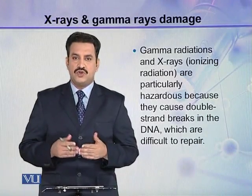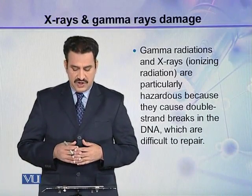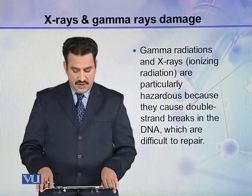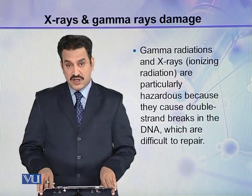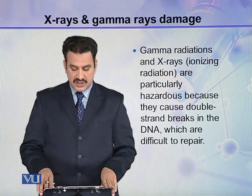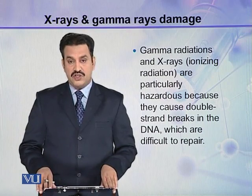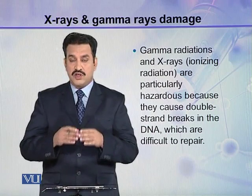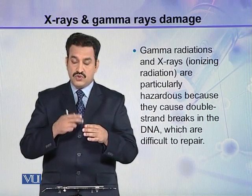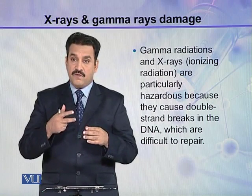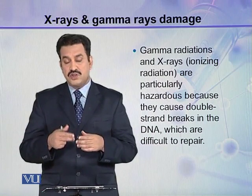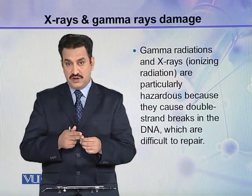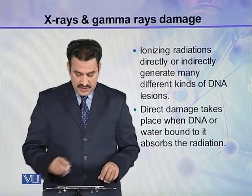Besides UV light, gamma radiations and X-rays, which are ionizing radiations, are particularly hazardous to DNA because they cause double strand breaks in the DNA, which are difficult to repair. In a DNA strand, two strands are helically coiled, and if one strand is broken, it is very easy to repair. But if both strands are broken, it becomes difficult to repair.